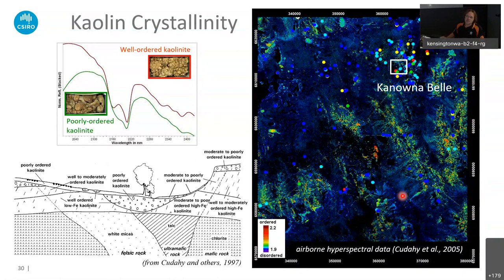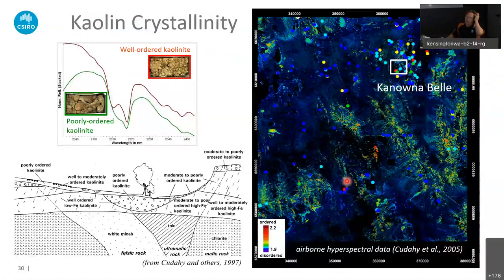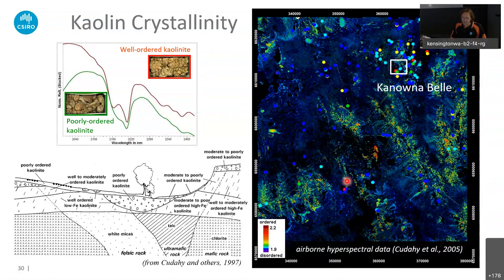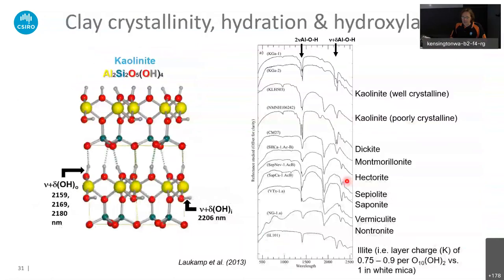It's not always that simple — you can re-crystallize kaolinite with groundwater injection or similar, getting a well-ordered kaolinite — but on large scales it works quite well. Comparing Tom's map with maps that Ravi Anand produced from the regolith, there's a really good overlap.